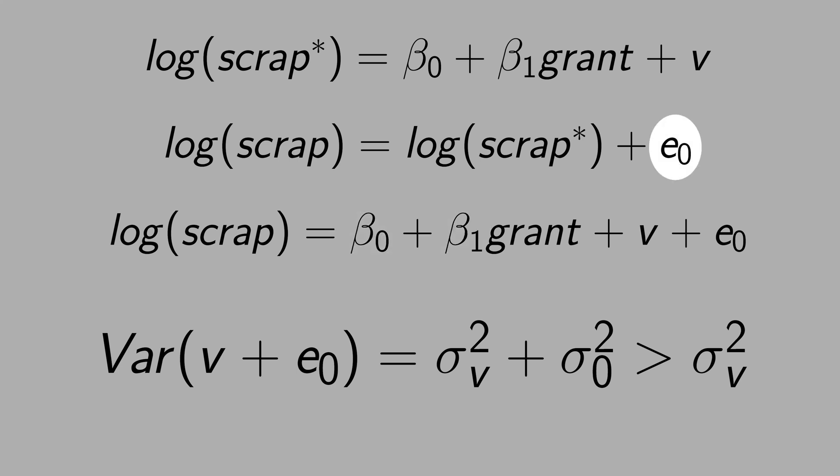Now, let's assume that the measurement error is a constant. The variance of a constant is zero. In this case, this will not affect the inference. But the intercept will be different. But the slope, what matters, will not change.